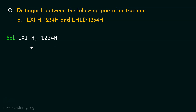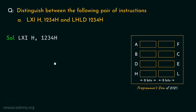For LXI H,1234H — note that H stands for the HL register pair. The mnemonic LXI means 'load the extended register with immediate value.' Within the instruction itself we are sending 16-bit data to be loaded into the HL register pair. The trailing H in the value notation indicates the value is hexadecimal.